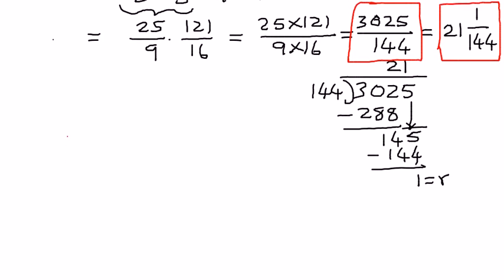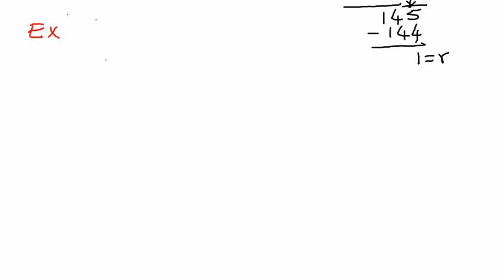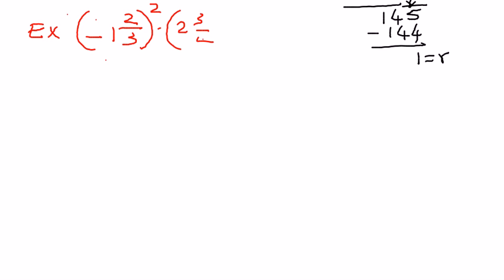Let's take another simple example. This time, let us say we have negative 1 and 2 over 3, the whole thing raised to the power of 2, times 2 and 3 over 4, raised to the power of 2. We have taken a very similar example as before, but this time one of the terms has a negative sign for the base term.